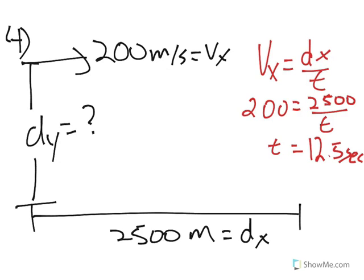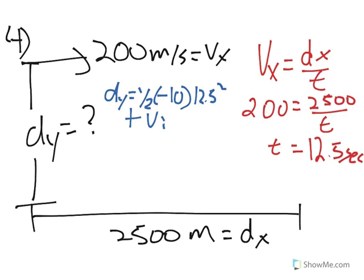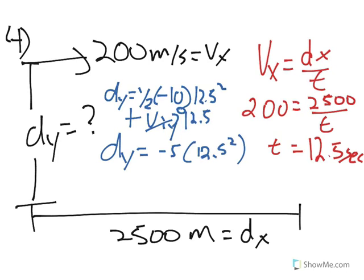Then we plug that back into dy. So dy is equal to one half times negative 10 times 12.5 squared plus the initial velocity in the y times 12.5. But the initial velocity in the y is zero because it leaves at a horizontal angle, so we end up doing dy equals negative 5 times 12.5 squared, which gives you 781 meters.